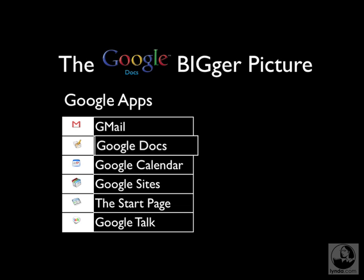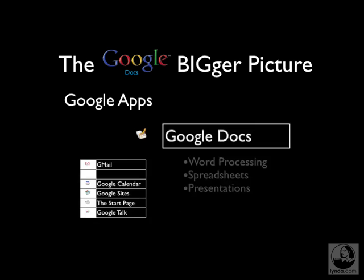Google Talk also allows you to do things like voice calls, voicemail, and even file sharing. Now, let's zero in on Google Docs, because it's made up of three of its own applications: one for word processing, sometimes called Docs; Spreadsheets, a spreadsheet application for working with numbers; and if you need to create cool presentations, whether for a local event or via the web, there's a presentations application in there as well.